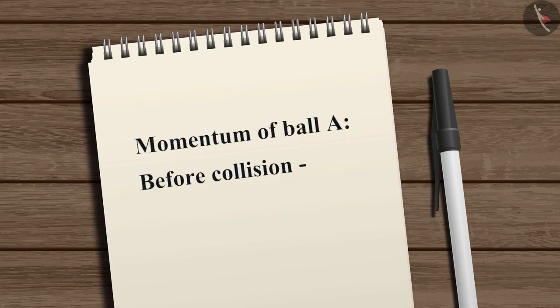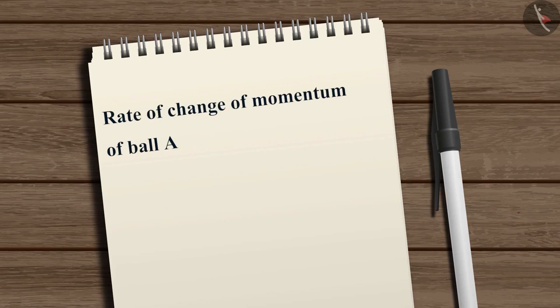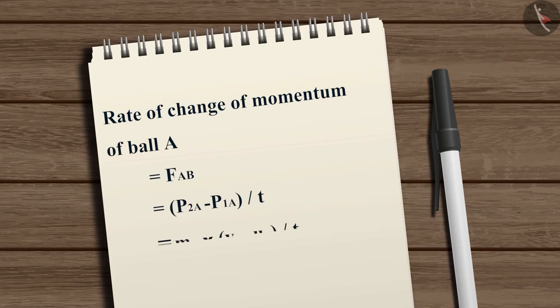Now, from the definition of momentum, we can say that the momentum of ball A before and after the collision is MA·UA and MA·VA respectively. Then, the rate of change of momentum of ball A, which is equal to FAB, is equal to (P2A minus P1A) divided by T. During the collision, this will be MA multiplied by (VA minus UA) divided by T.